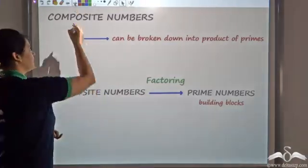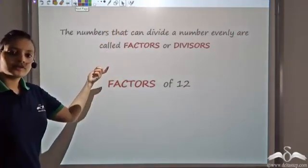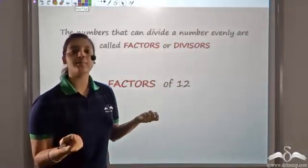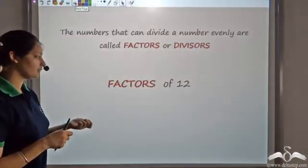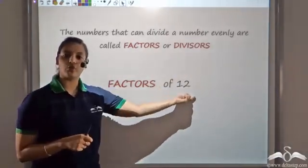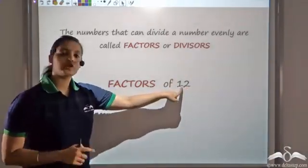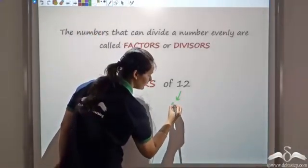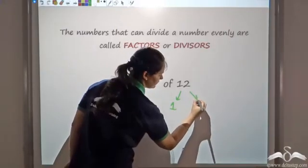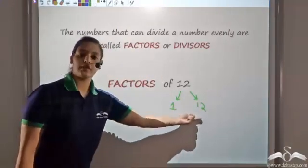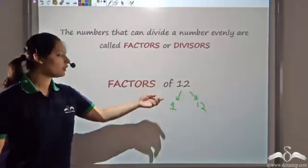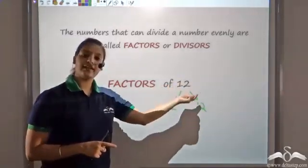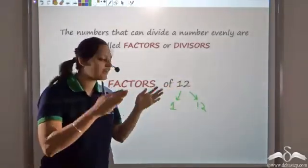Let us recall what a factor is. A number is completely divisible by another number, then that number becomes a factor of it. So if I want to find factors of twelve, I know two factors for sure: a number is always divisible by one and the number itself, which is twelve. Now how do I find the rest of the factors? I need to find numbers that can perfectly divide twelve.